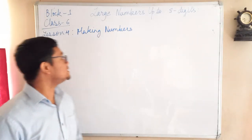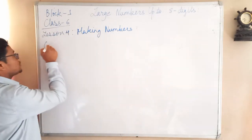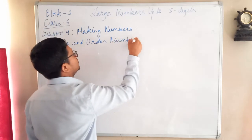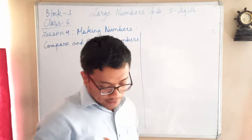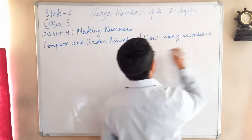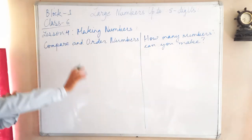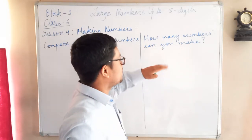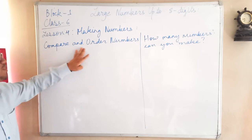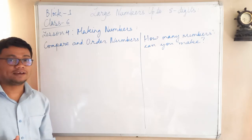Now our next topic is Making Numbers. Under this topic we are going to learn how to compare and order numbers, and also how many numbers you can make from given digits. This topic is going to be very interesting. I am teaching this as a recap since you have already done it before, just so it comes back to your mind.